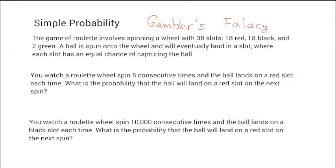A game of roulette involves spinning a wheel that has 38 slots: 18 of them are red, 18 are black, and two are green. A ball is spun in the wheel and eventually lands in a slot where each slot has an equal chance of capturing the ball. This equal-chance property is important for analyzing probability — you have to have equal chances or some way to proportionalize them. So you watch the wheel eight times and the ball was red every single time.